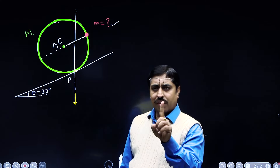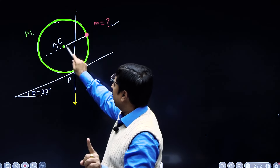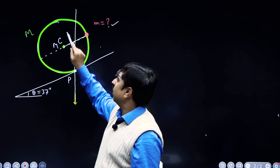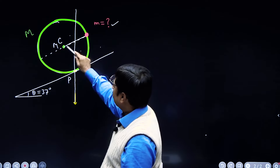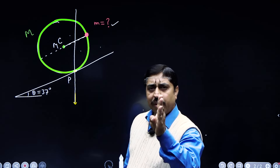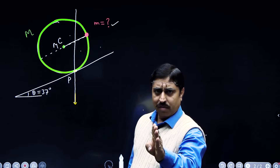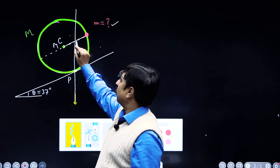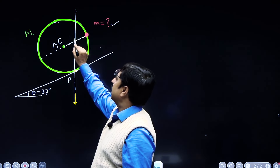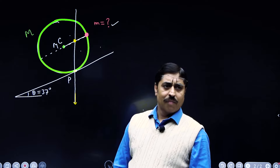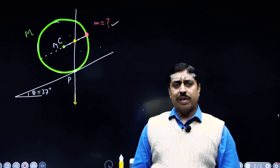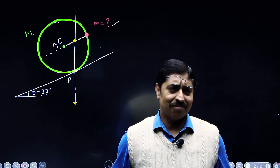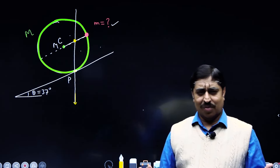Obviously, the center of mass of the green and red particles will lie somewhere on this line only — it cannot lie anywhere off this line. It has to lie on this line, and I said that equilibrium is possible only when the center of mass lies on this vertical line. So we know the position of the center of mass of this system — this point is the center of mass of this system — and only then is this equilibrium possible. So this solves the question conceptually.